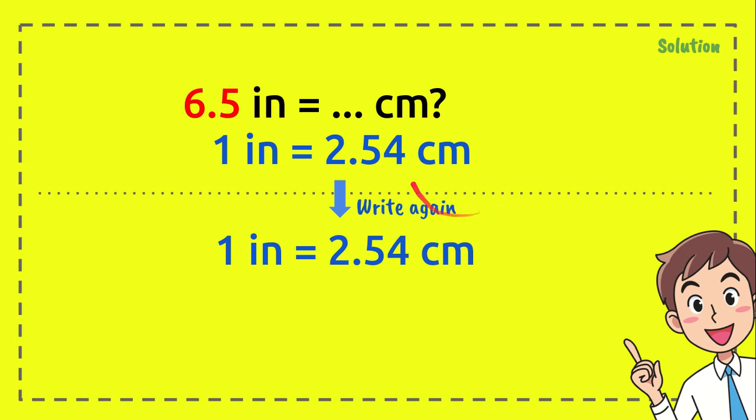Now we have the number from the question, which is 6.5. We want to make it equal. The rule to make it equal is by putting 6.5 here and here as well.